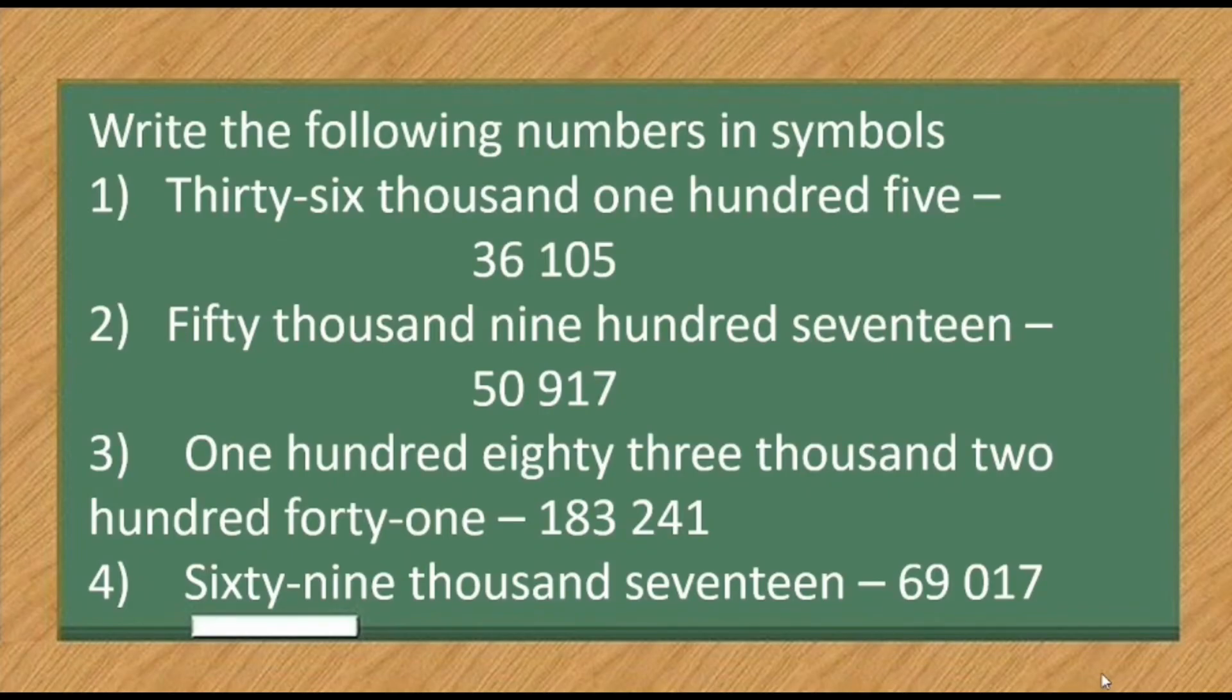The next examples are written in words and then in symbols. Repeat after me. Thirty-six thousand one hundred five. Fifty thousand nine hundred seventeen. One hundred eighty-three thousand two hundred forty-one. Sixty-nine thousand one hundred seventeen.